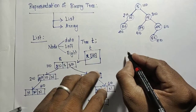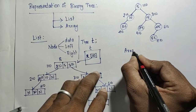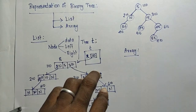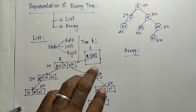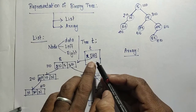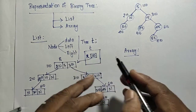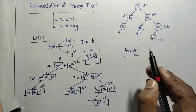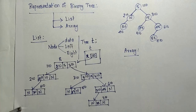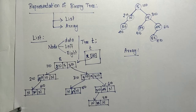The next is array representation. In some applications, we may need to represent the binary tree using an array. In that case, we will not use dynamic memory allocation — we are not going to use the list concept at all. We are going to create an array that will be treated as a binary tree. How to create it and what will be the size of that array — that we have to fix depending on the tree.